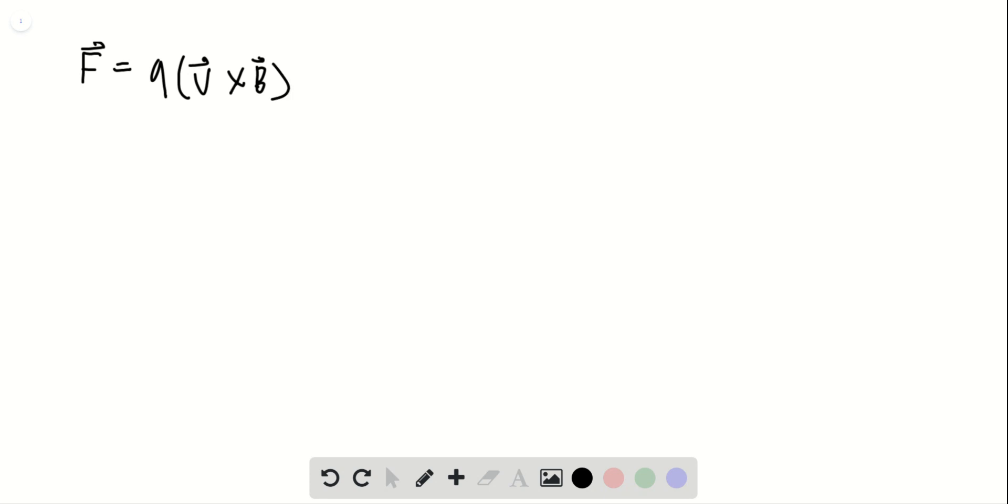So I can write this in unit vector notation, which is the x component of F, i hat plus y component j hat plus a z component k hat.